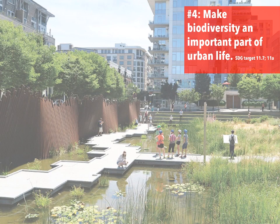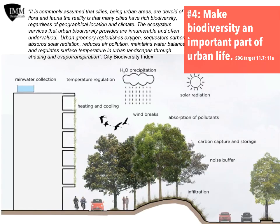DOP No. 4, Make Biodiversity an Important Part of Urban Life, is correlated with the UN's SDG targets 11.7 and 11A. The aim of this principle is to promote urban green spaces as recreational opportunities, as well as urban ecosystems able to regulate the supply and quality of water, air, and soil,